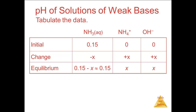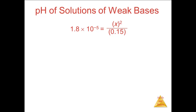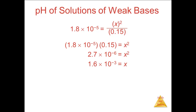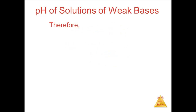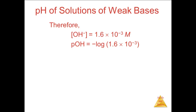Substituting into the equilibrium expression, we get 1.8 × 10⁻⁵ equals x squared over 0.15. Following through the math, we get x equals 1.6 × 10⁻³. At this point, you need to stop and think — x is the concentration of hydroxide ions, not hydrogen ions. Therefore, the concentration of OH- is 1.6 × 10⁻³. pOH equals -log(1.6 × 10⁻³), which equals 2.80. To find pH, we subtract the pOH from 14.00, giving pH = 11.20.